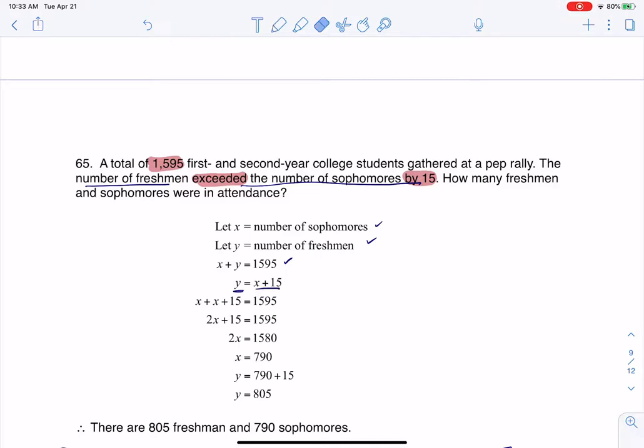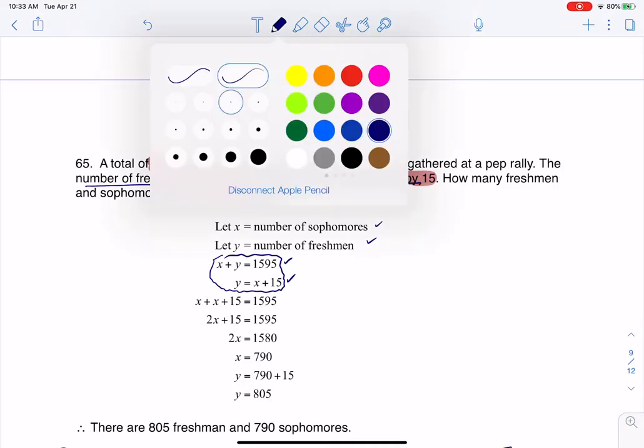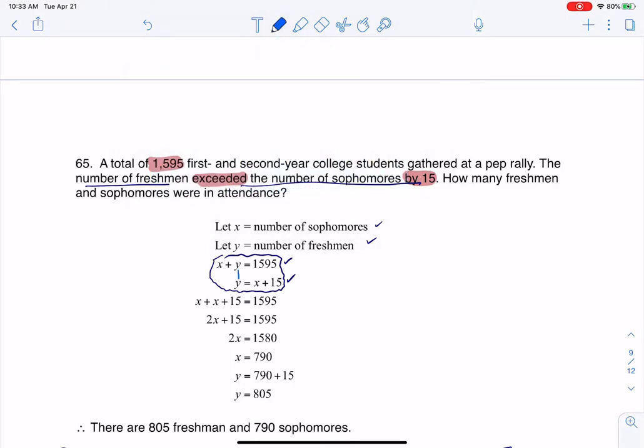So here are my two equations to make my system of equations. Let me just put a little bubble around them. It's all prepped for substitution. What I'm going to do is take this y equation, y equals x plus 15.